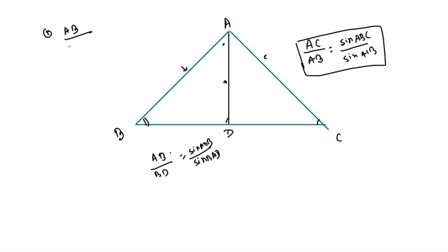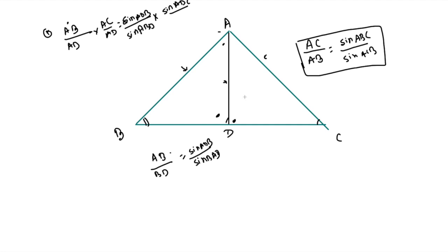So we write: AB upon AD into AC upon AD. In triangle ADB, working on AB, the corresponding angle is D, giving sine ADB upon sine ABD. In triangle ADC, working on AC, the corresponding angle is D, giving sine ADC upon sine ACD. This is the sine formula applied across two triangles.